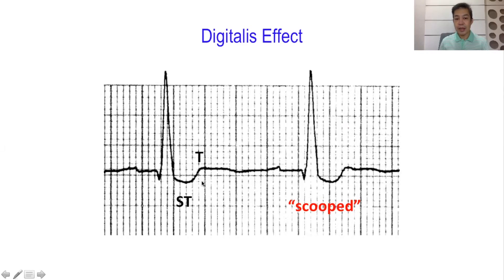For example, in this ECG tracing, the T wave is initially negative, becoming positive but flattened. This characteristic combination of ST segment depression and a diphasic T wave with initial negative deflection produces the scooped appearance, which is quite typical of digoxin effect in the body.